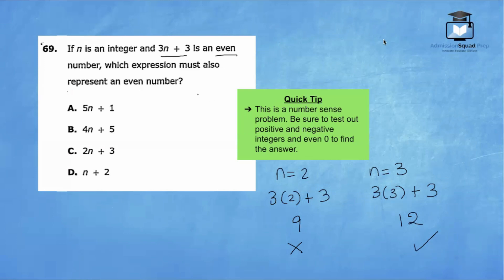So let's test out the value n equals 3 in our other answer choices. We have 5 times 3 plus 1, which is 16. We have 4 times 3 plus 5, which is 17. We have 2 times 3 plus 3, which is 9. And we have 3 plus 2, which is 5. After checking out these four answer choices, the only one here that is correct and that's also even is answer choice A. A great way to solve number sense problems is always to test out a positive and negative integer and sometimes even zero to check out which answers might make the most sense.